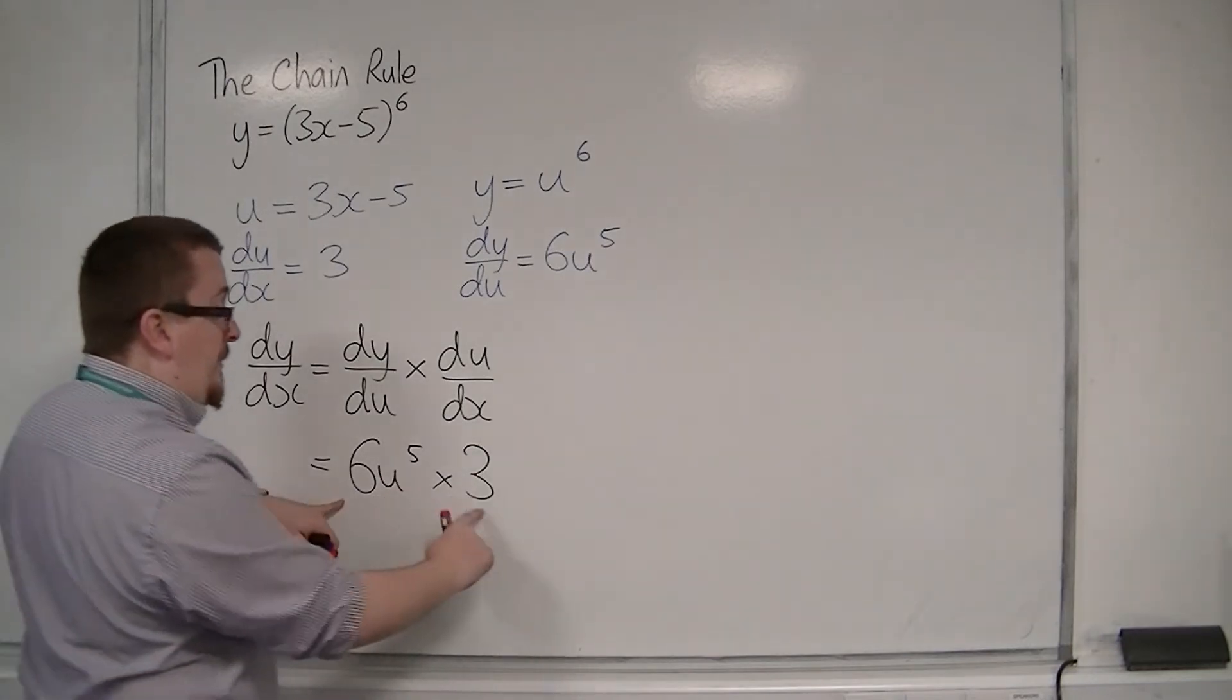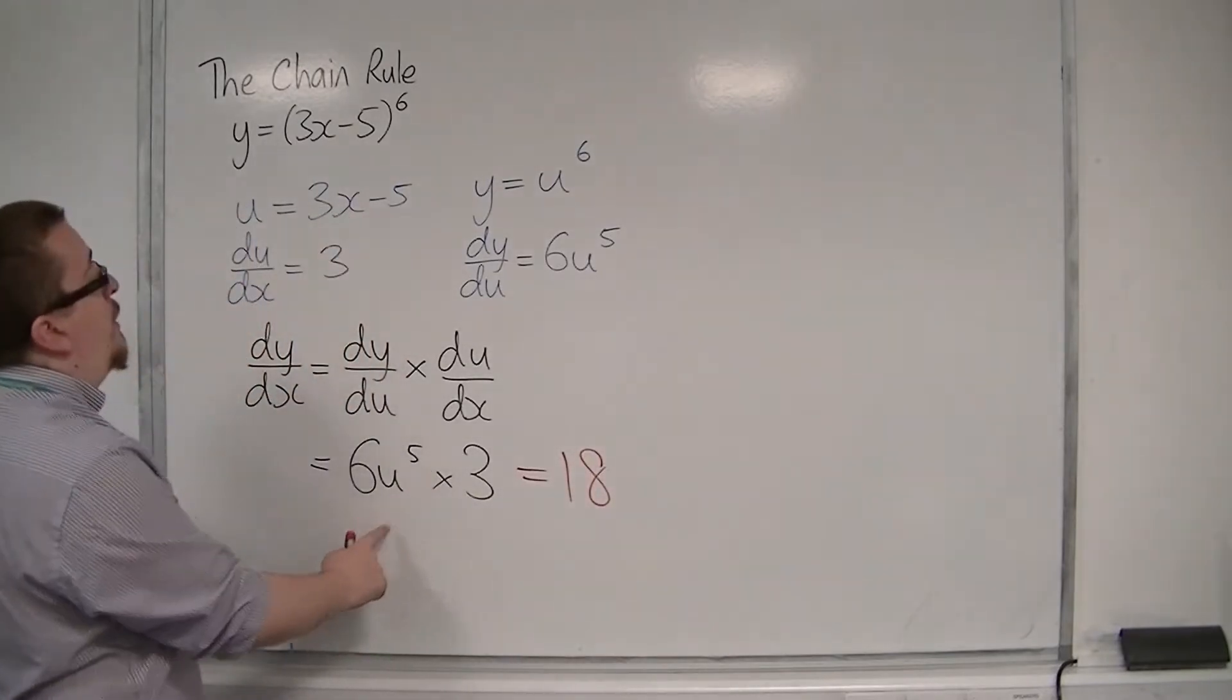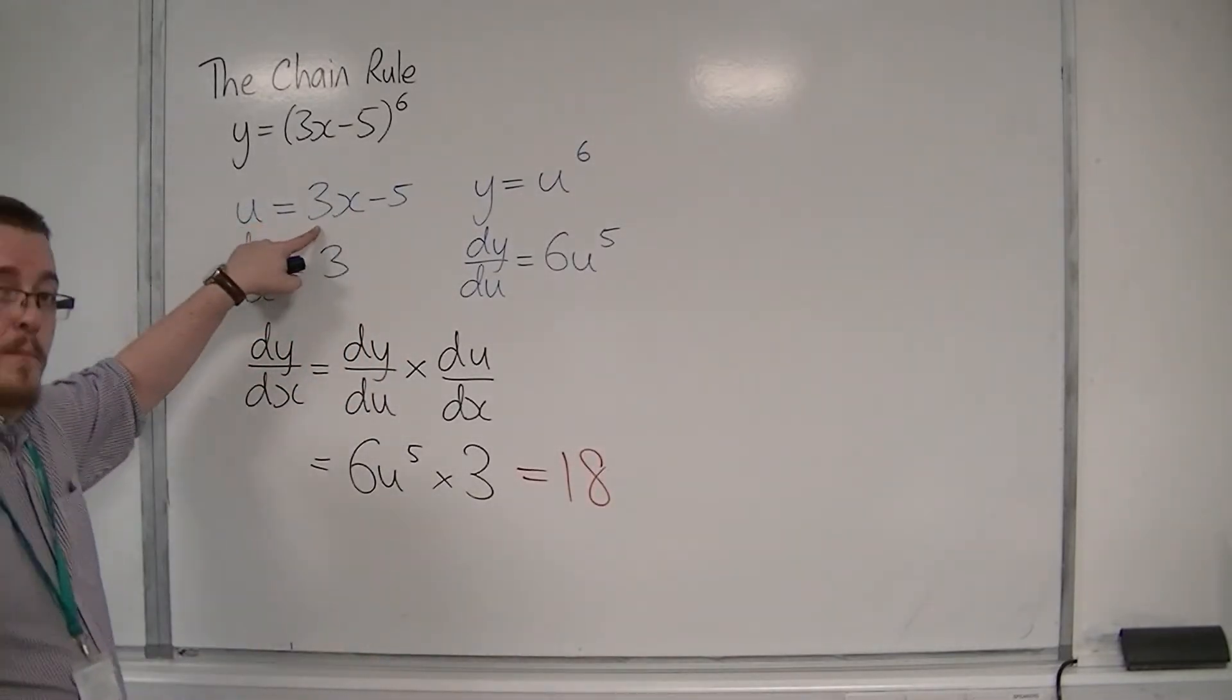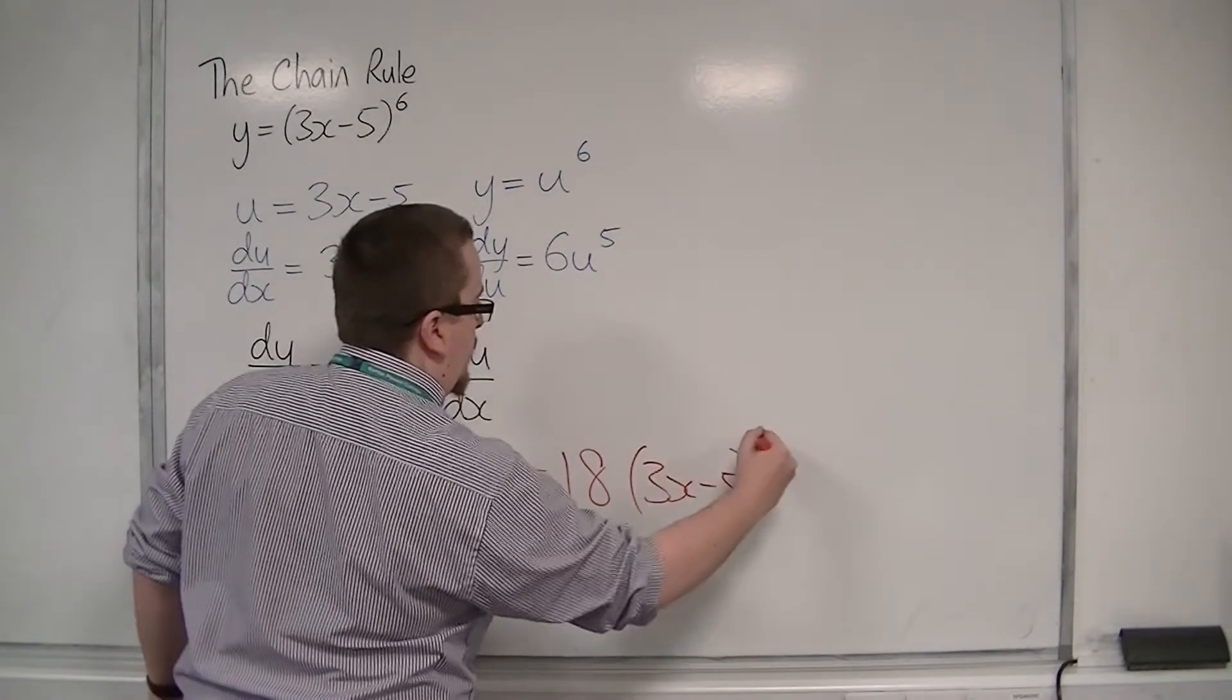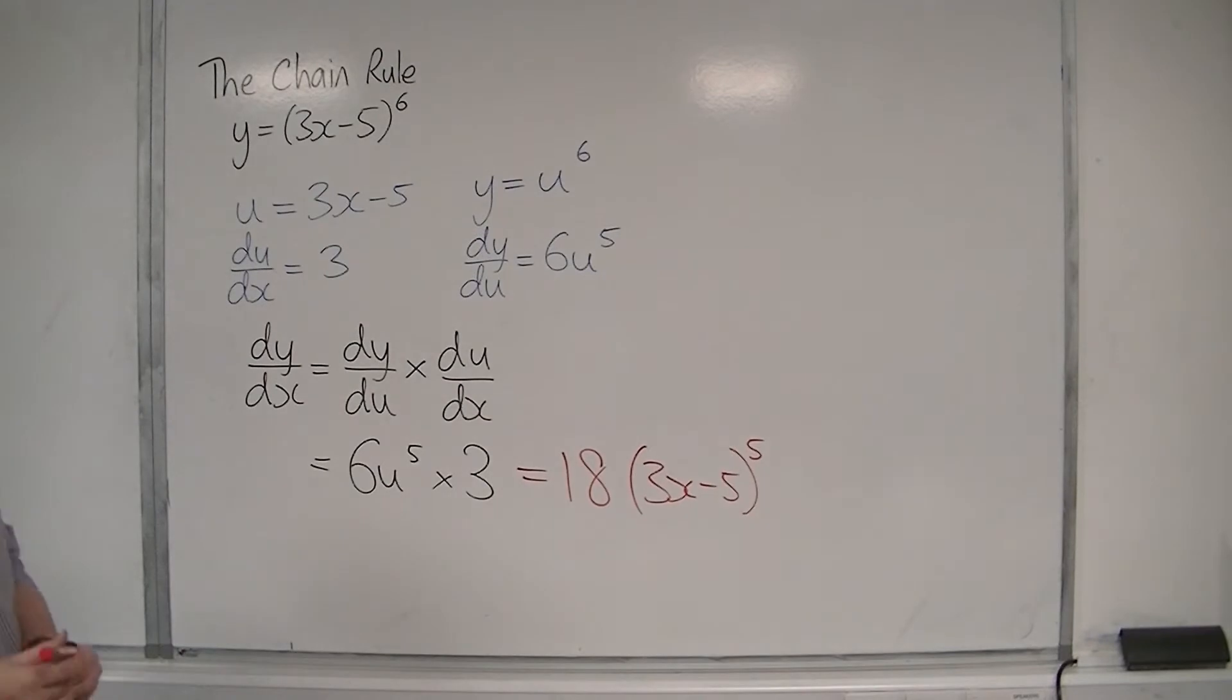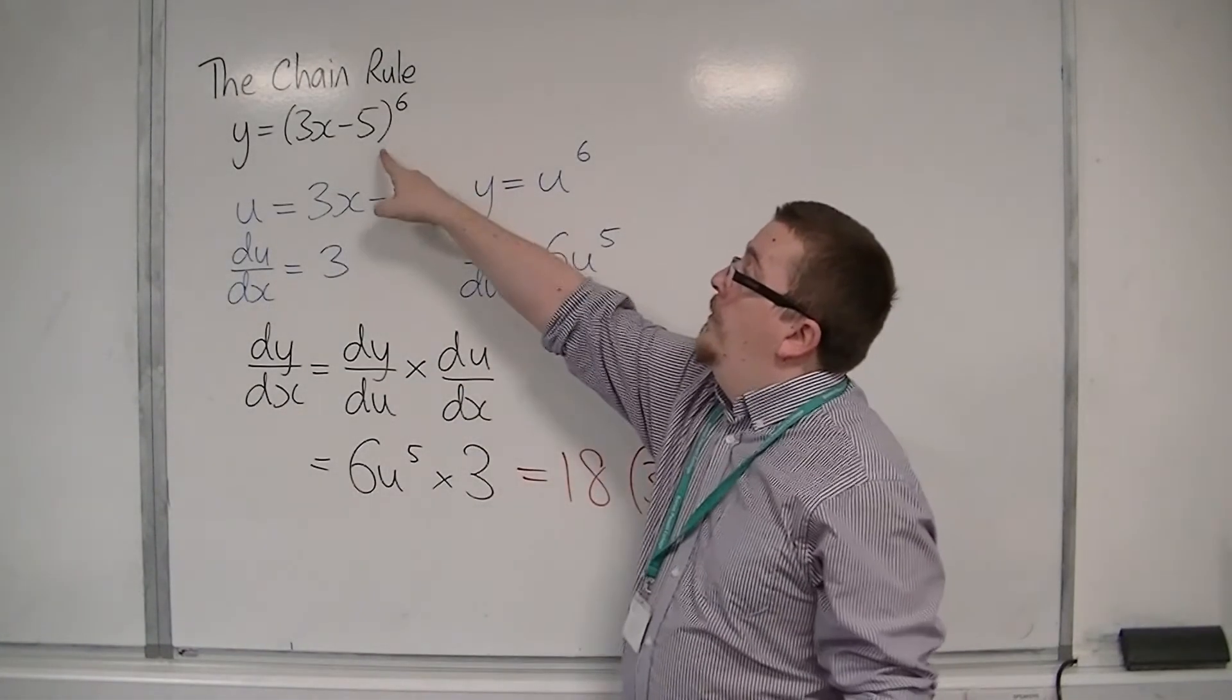So we have 6 times 3 is 18, and then I've got u to the power of 5. But remember u is 3x minus 5, so this is 3x minus 5 to the power of 5. And that is the derivative of y.